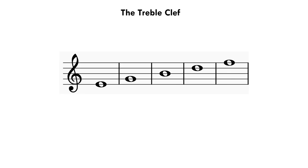This is what the notes would look like when they are just on the lines. Starting from the bottom line we've got the note E, then G, then B, then D, and finally F. One way in which you can remember the order of the notes is using the phrase 'Every Good Boy Deserves Football.' You can make up your own phrase if you find that it's easier to remember.